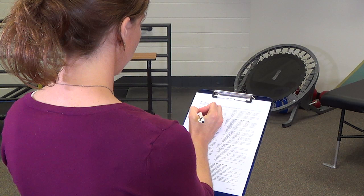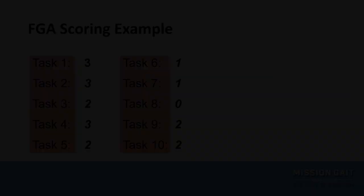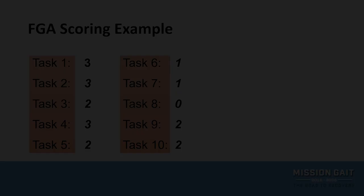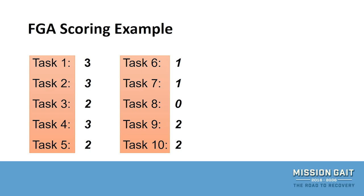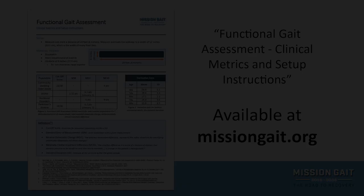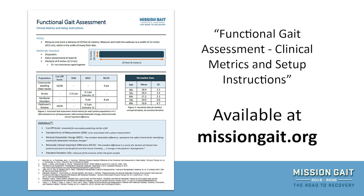Once you have completed all 10 tasks, add up the scores for each task. Perfect performance of the Functional Gait Assessment would yield a score of 30. The sum you receive is expressed as the score out of 30 — for example, 19 out of 30. When used with current clinical statistics, such as those found on MissionGait.org, you can use the Functional Gait Assessment score for effective patient education, outcome measurement, and determination of fall risk.